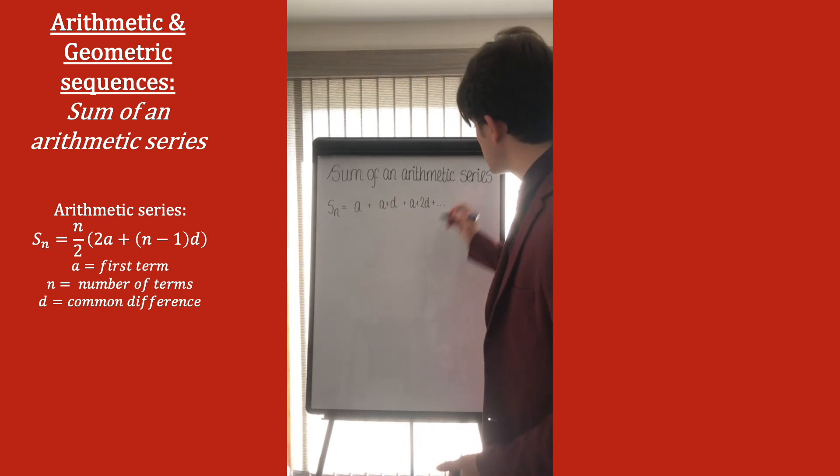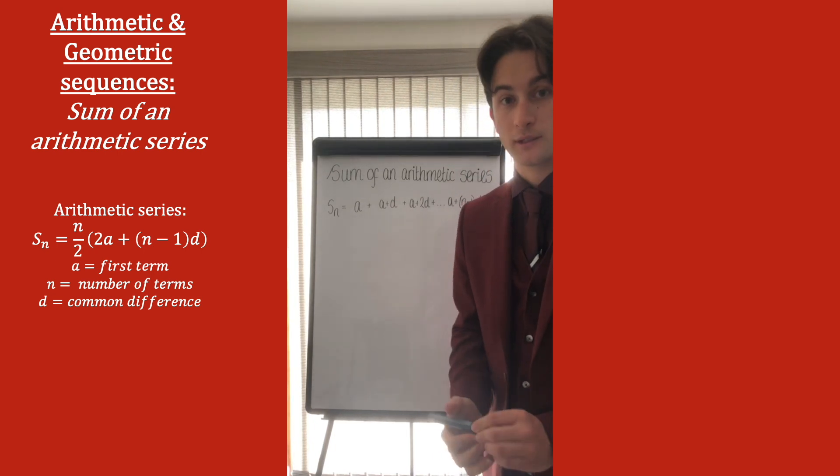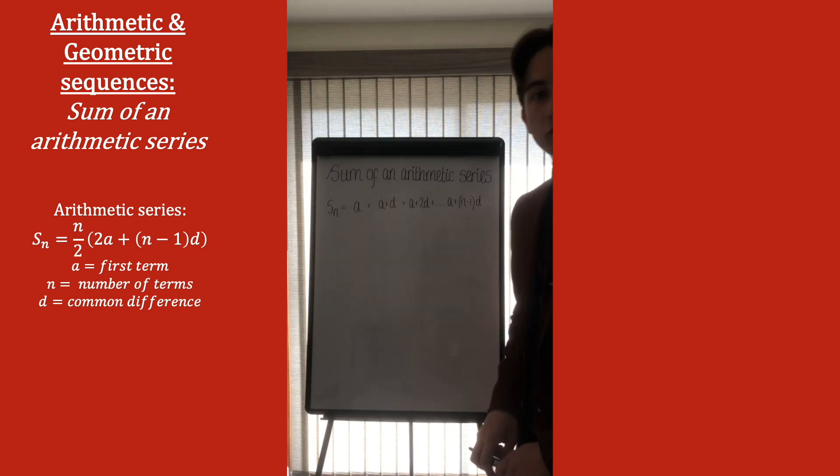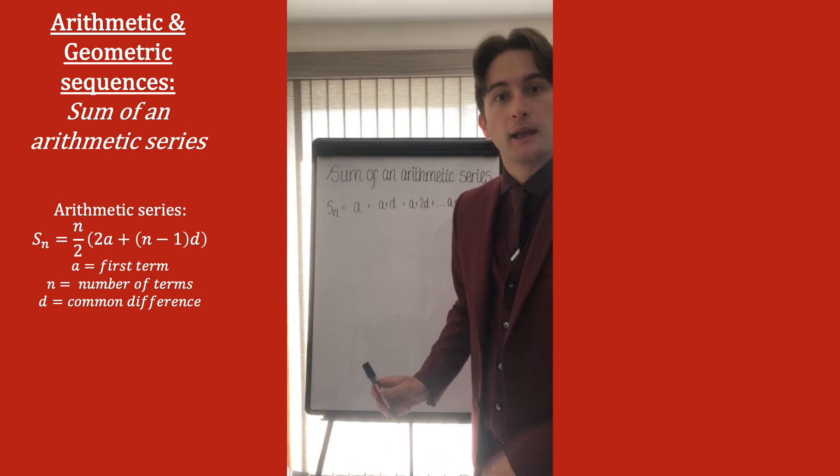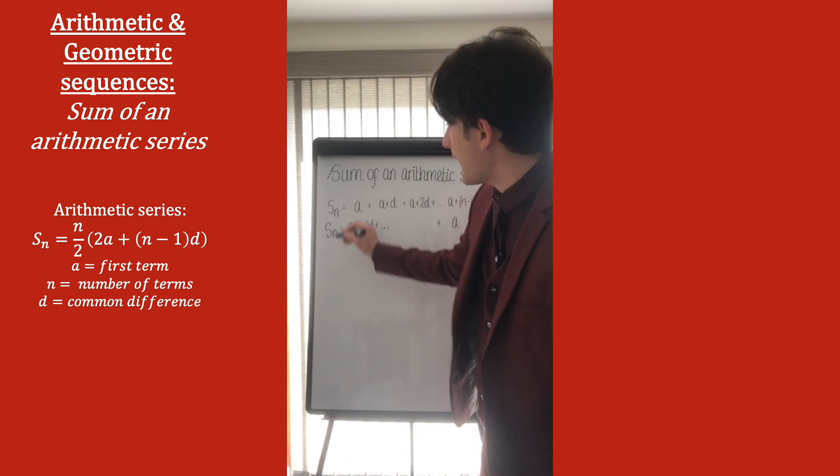Up to the last term, which we know is given by A plus (N minus 1) times the common difference, or A plus (N minus 1)D. So we're going to add all of these together. The trick for this derivation is to now write this sum in reverse, and then we'll add the two sums together.